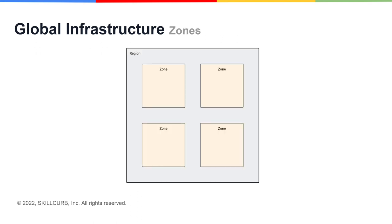Within a region, you have three or more zones. A zone is a deployment area for Google Cloud resources. Zones should be considered a single failure domain within a region. To deploy fault-tolerant applications with high availability and help to protect against unexpected failures, deploy your applications across multiple zones in a region.